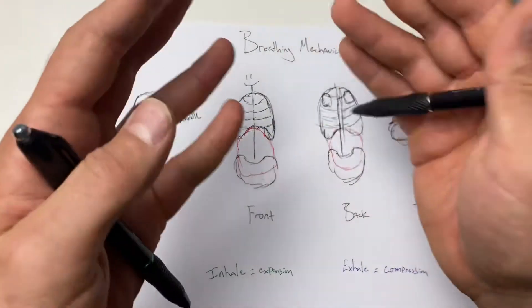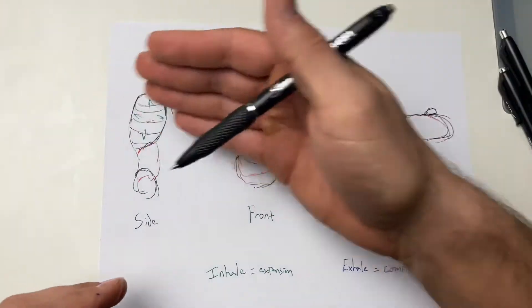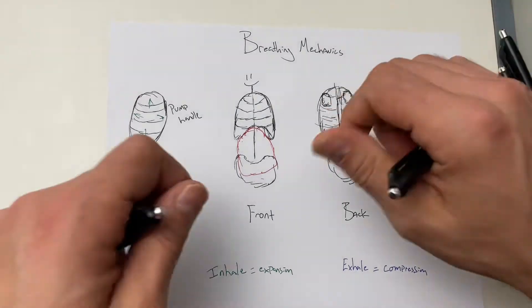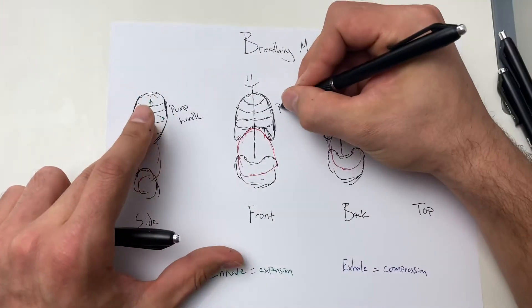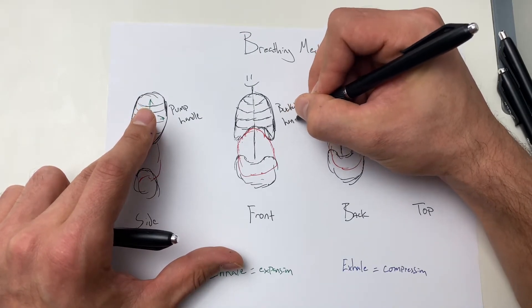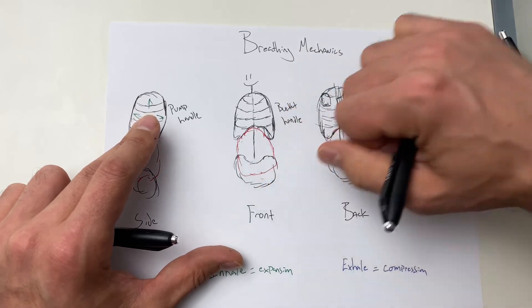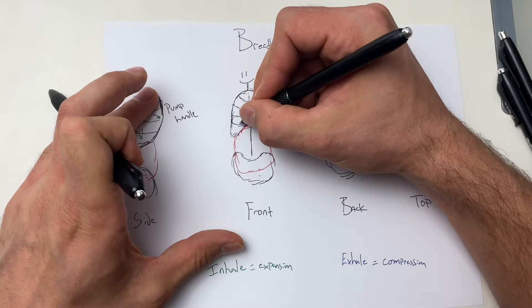With the side, remember, when we breathe, we want 360 degrees. So in the front we have the pump handle action. On the sides, we want what's called the bucket handle. So if you think of like a five-gallon bucket, when you go to lift the handle off the side, these should come out.